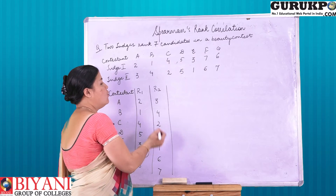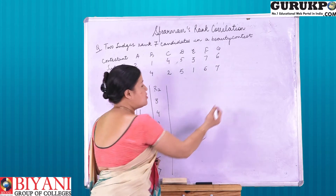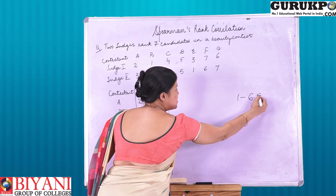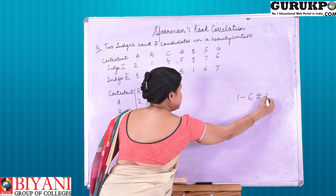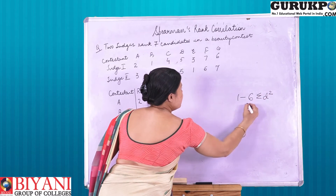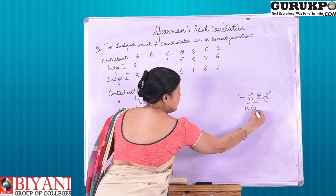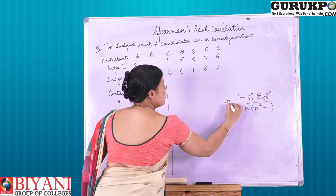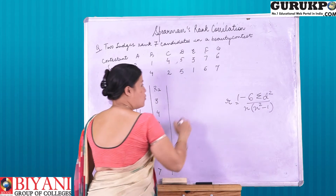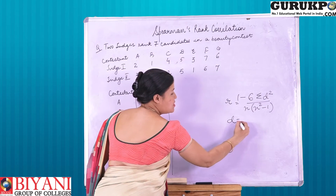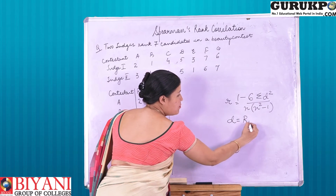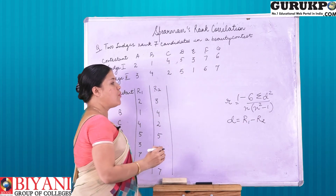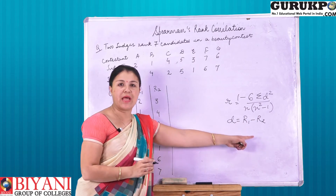The formula for rank correlation is: 1 minus 6 sigma d squared upon n(n squared minus 1), where d means r1 minus r2, that is the difference between rank 1 and rank 2.